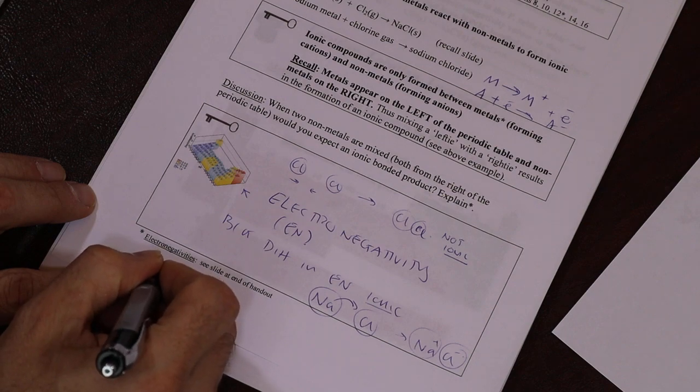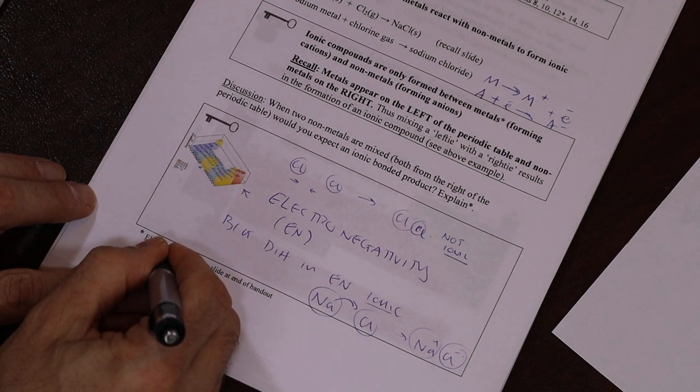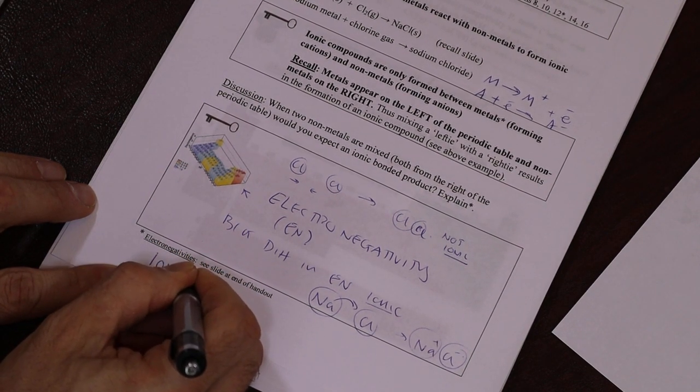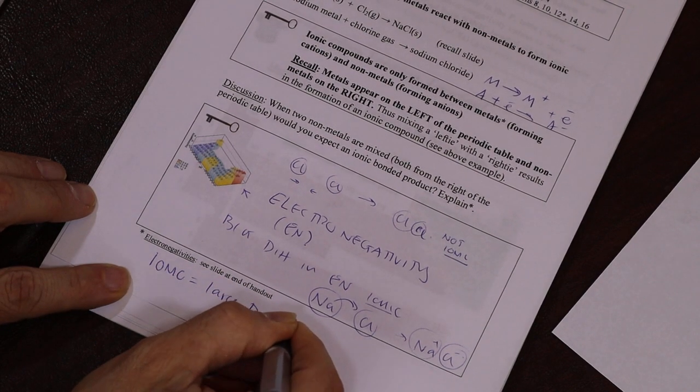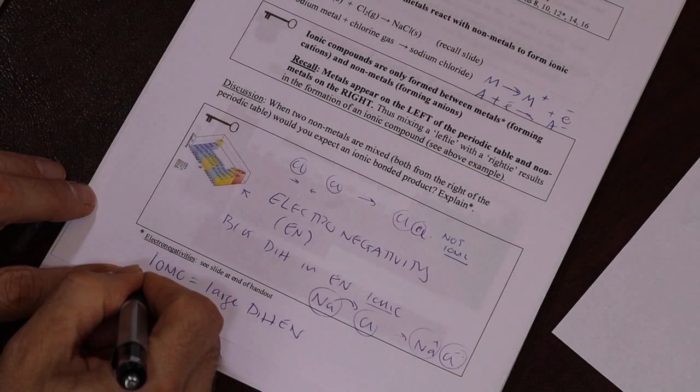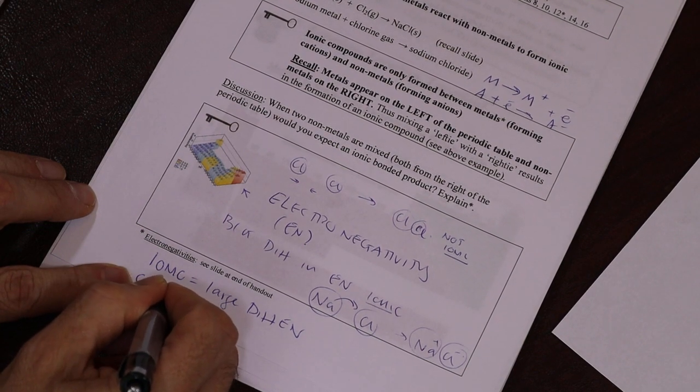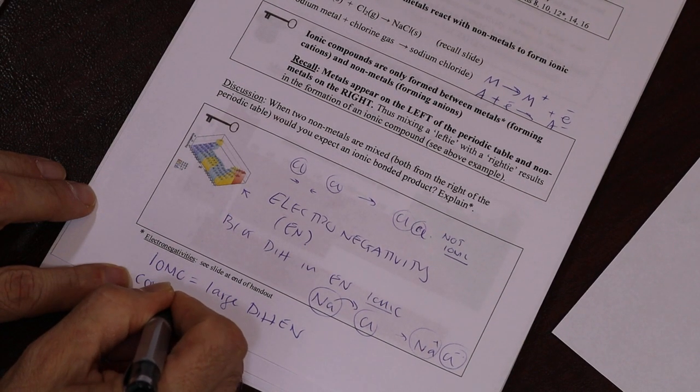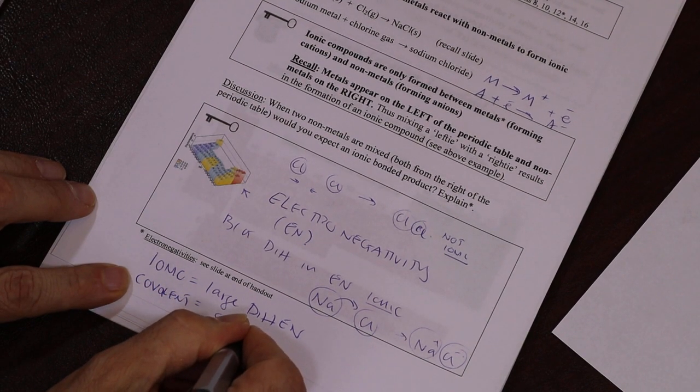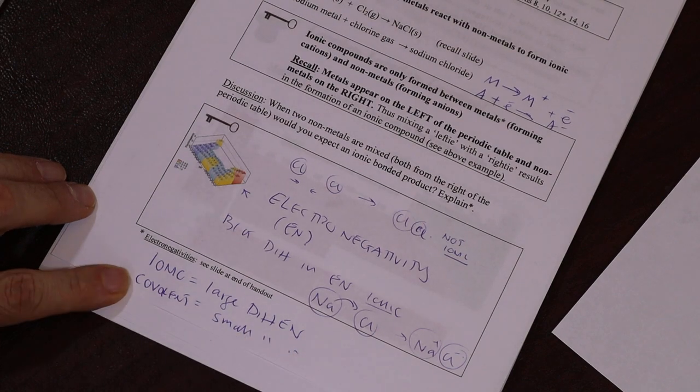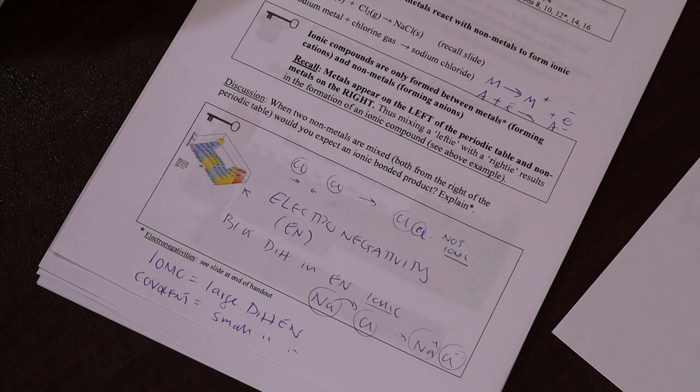If it's a large difference, it's ionic. So we can write that there: large difference electronegativity. And if it's covalent, which is the other form of bonding, it's a small difference in electronegativity. Okay, so let's hold that up so you can see it. Remember, you can pause this at any time, you have that power, right?